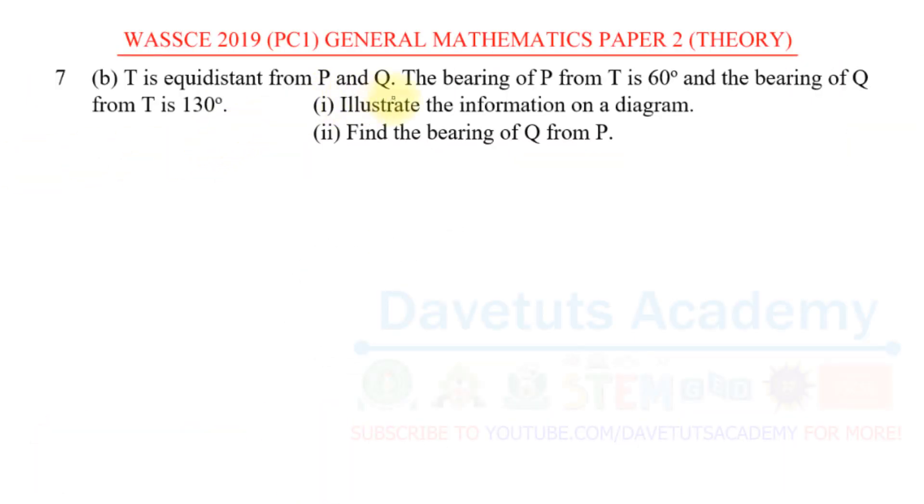T is equidistant from P and Q. The bearing of P from T is 60 degrees and the bearing of Q from T is 130 degrees. We have to illustrate this information in the diagram and find the bearing of Q from P. Now this is clearly a question from bearing and distance, and to even get it right we need to get our diagram correctly.